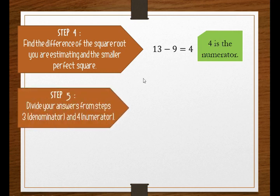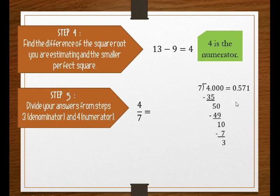Step five: divide your answers from step 3, the denominator, and step 4, the numerator. That is 4 over 7, and 4 divided by 7 equals 0.571.